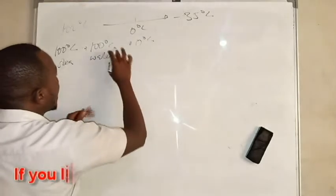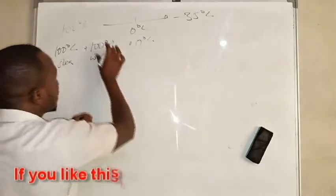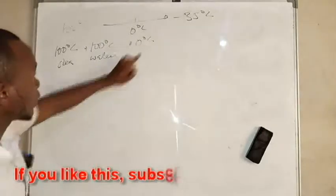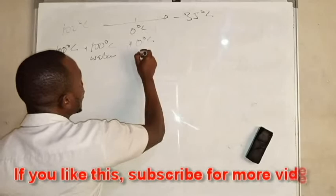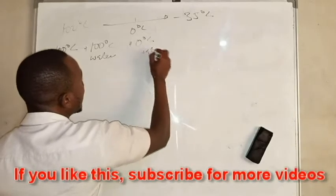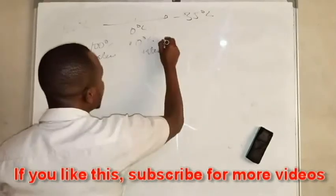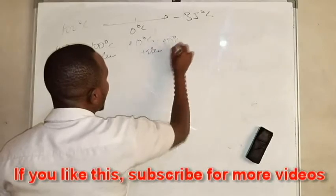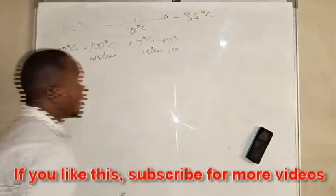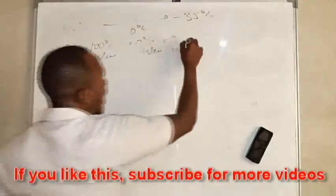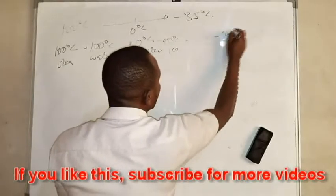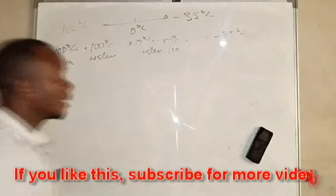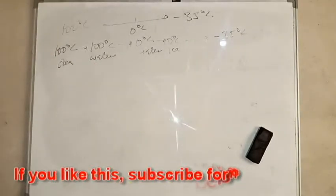From 100 degrees Celsius the water cools down to zero degrees Celsius — that's a temperature change with zero as the final temperature. Then at zero degrees Celsius we have the combination of water turning to ice, so from zero degrees Celsius we form ice.